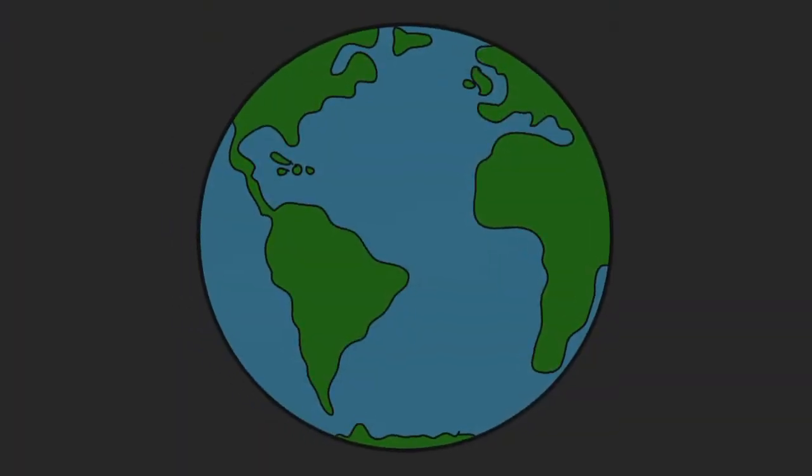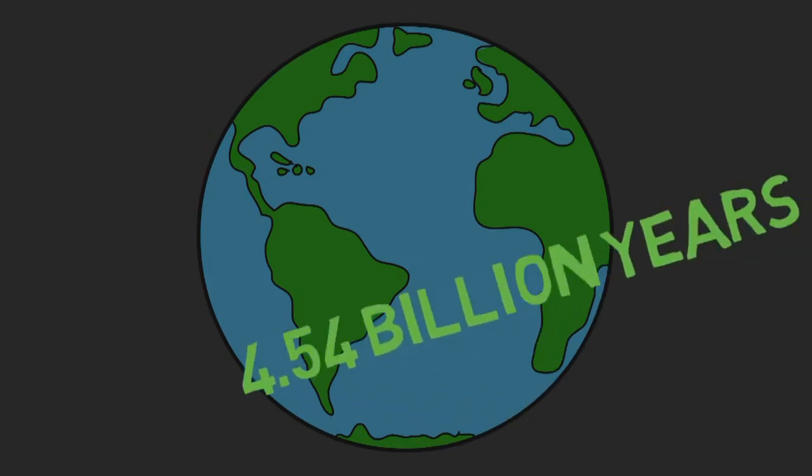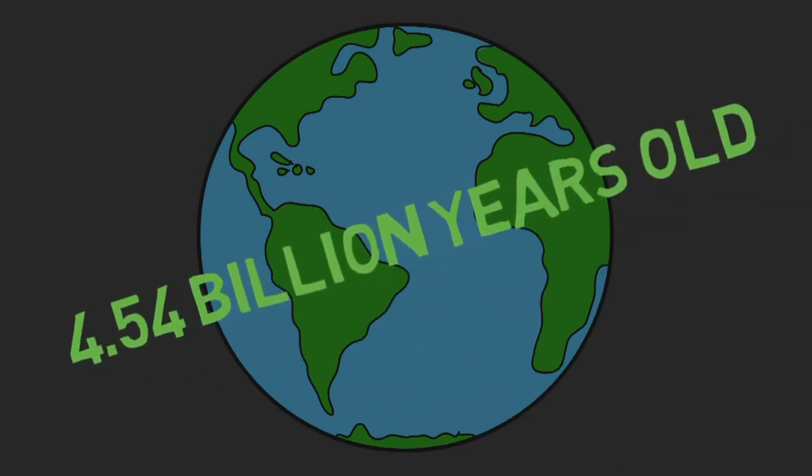Given that these are the oldest sort of building blocks—the Legos of our solar system—we know that the Earth can't be older than those, because that's part of what the Earth's made of. So that puts an upper limit on the age of Earth at roughly 4.5 billion years.